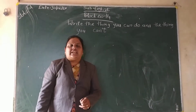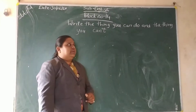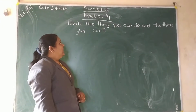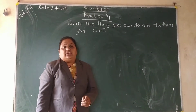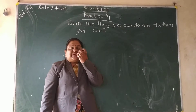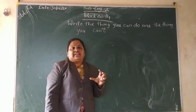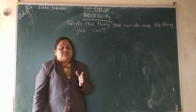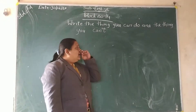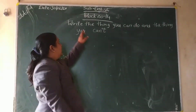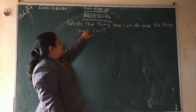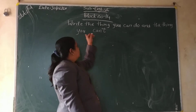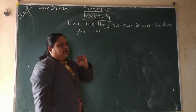Hi students and welcome. Today we are going to see English block number 14, where some exercises are there that we have to solve. So today we will see: write the things you can do and the things you can't.